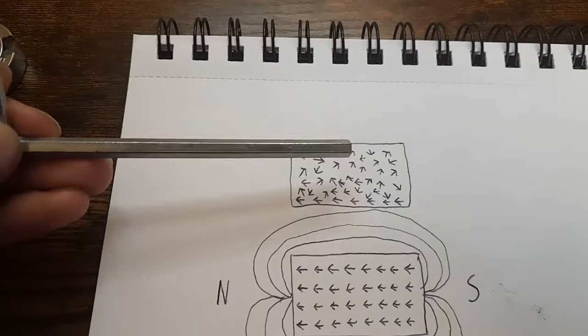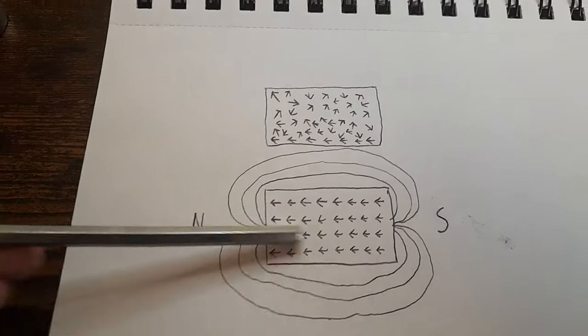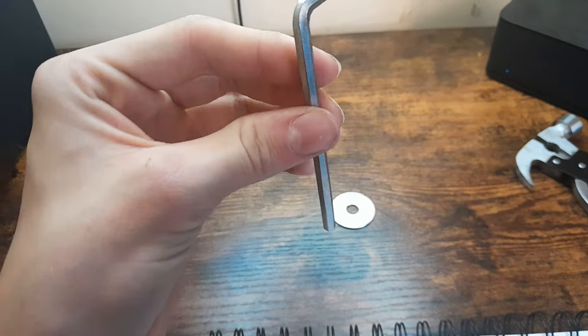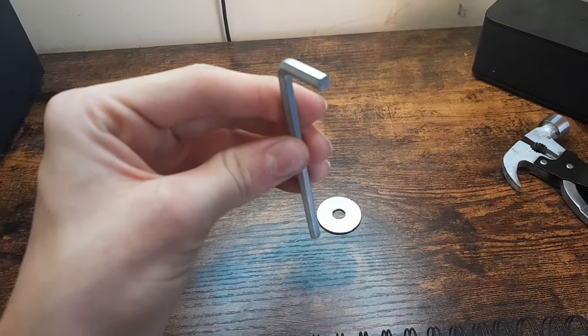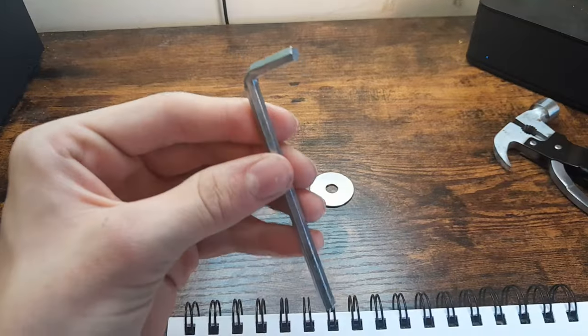What I'm gonna do is align the orbitals like in a permanent magnet inside the Allen wrench. And to do that is pretty easy. All I need to do is expose this Allen wrench to a strong magnetic field like this one here, and then we're going to beat it with a hammer.